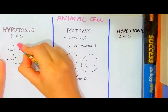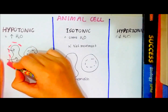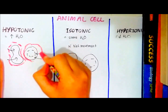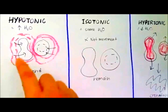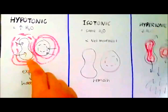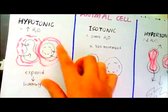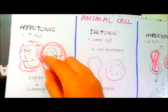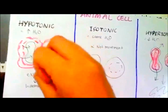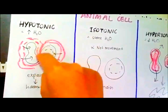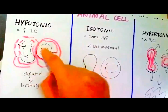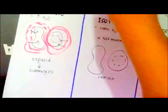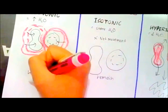The red blood cell will keep on expanding. Since the red blood cell does not have a cell wall, when the water diffuses into the red blood cell and causes it to expand, it will then burst. This process is known as hemolysis — the red blood cell will burst.